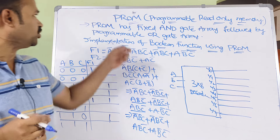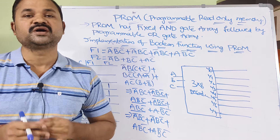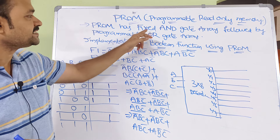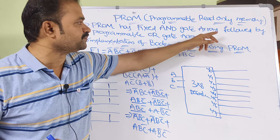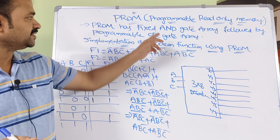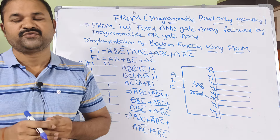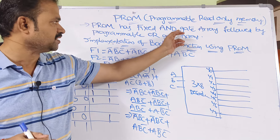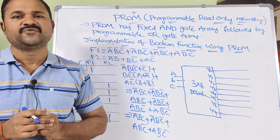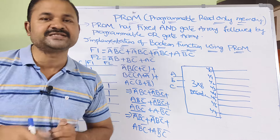Let us discuss about PROM, which in short stands for programmable read-only memory. PROM has a fixed AND gate array followed by a programmable OR gate array. The AND gate array is fixed — it is not programmable. We can't do any programming on the AND gates. In order to implement this fixed AND gate array, we are using a decoder. By default in PROM, the AND gate array means it is a decoder.